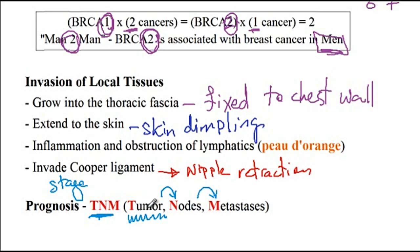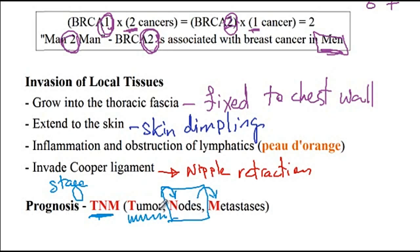If an exam asks which is the most important prognostic factor for a breast tumor — given features like size, depth of invasion, and histological features — and one answer choice states there has been invasion of the axillary lymph nodes, that would be the most important prognostic factor, because it indicates invasion has already started.